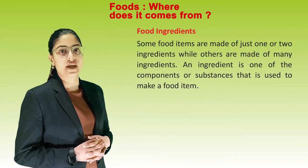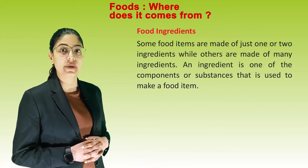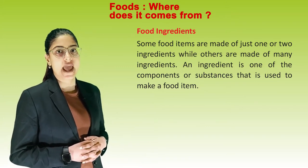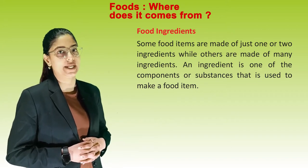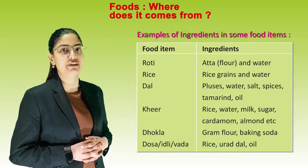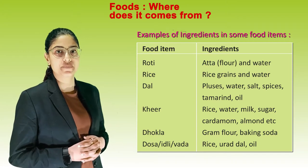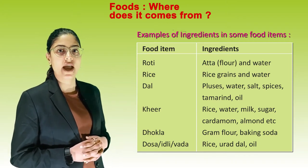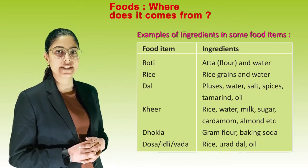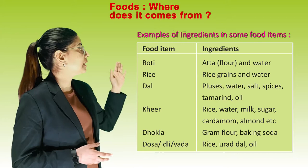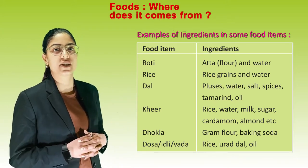Food ingredients. Some food items are made up of just one or two ingredients, while others are made up of many ingredients. An ingredient is one of the components or substances used to make a food item. Examples: Roti - aata and water. Rice - rice grains and water. Dal - pulses, water, salt, spices, tomato and oil.